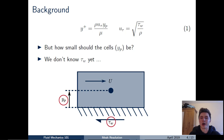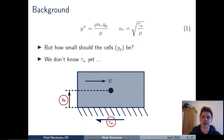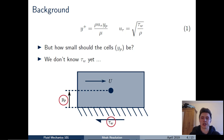Y-plus is the dimensionless distance of the cell centroid from the nearest wall, YP. YP is the physical distance from the wall to the cell centroid. Rho is the fluid density, mu is the kinematic viscosity, and U-tau is the friction velocity, given by the square root of the wall shear stress — a measure of the effective velocity in that cell.